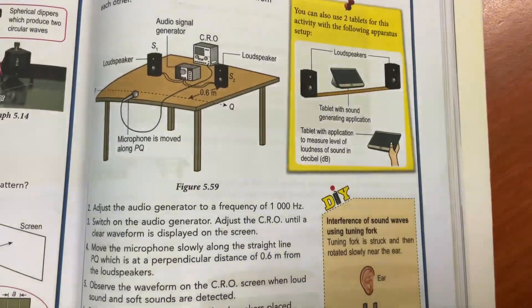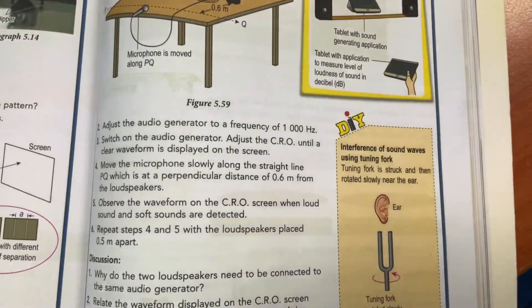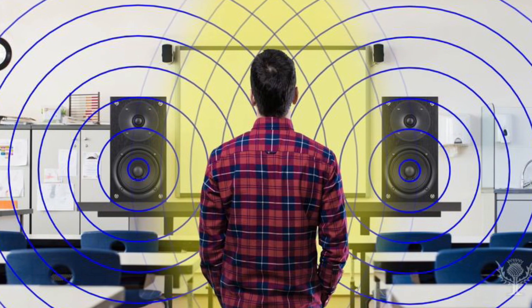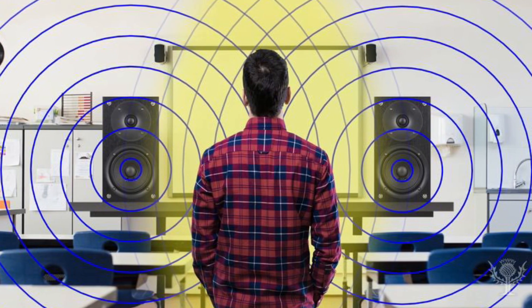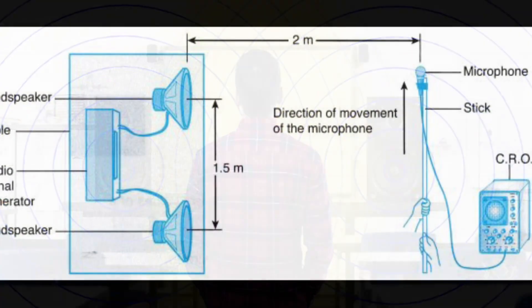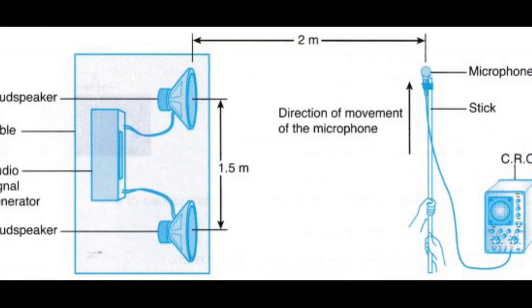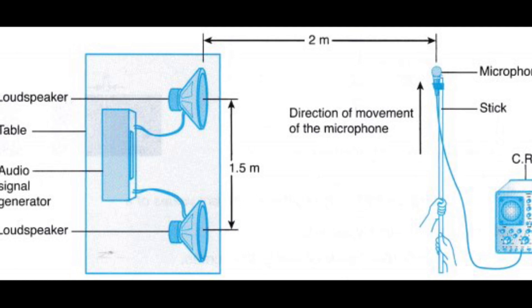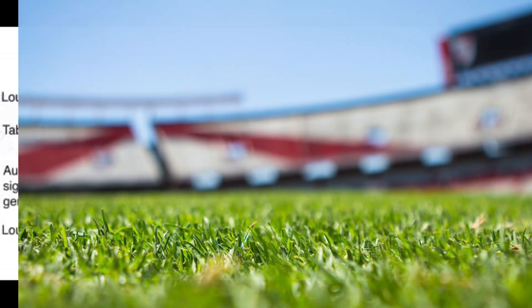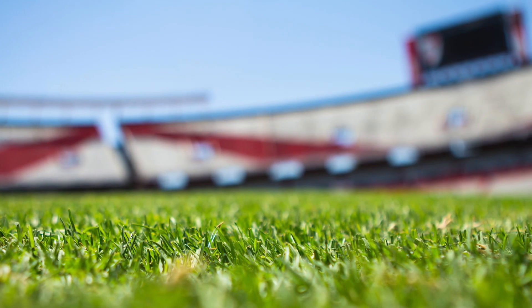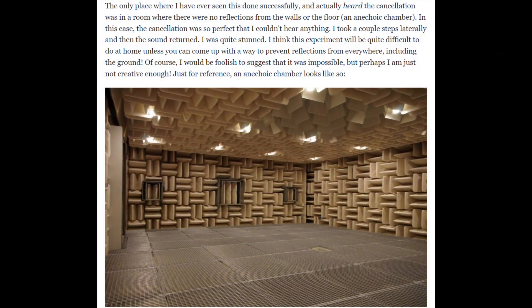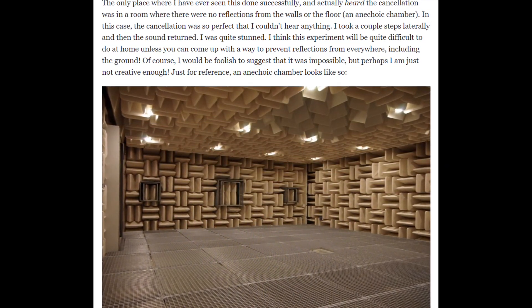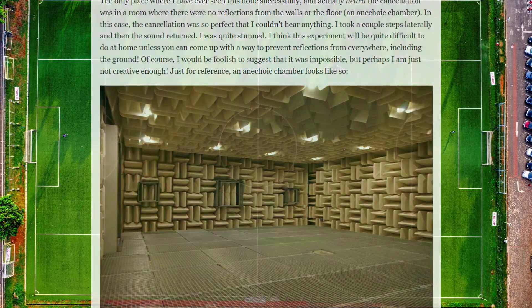Students find it difficult to imagine and understand interference of soundwaves. Hence, a demonstration and experiment must be carried out. However, it will be difficult to carry out due to a few reasons. The first: the experiment must be carried out in an open space or a room with noise cancellation, where there will be no reflections from the walls or the floor.